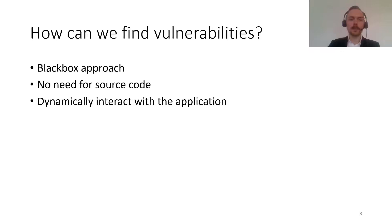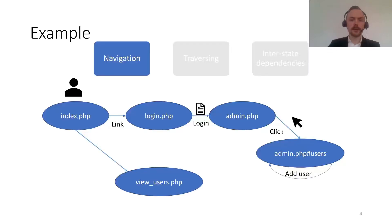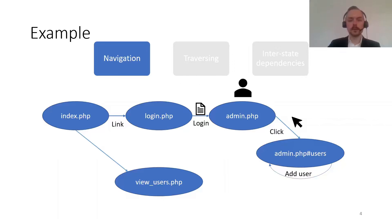This makes cross-site scripting an important topic to study. So how can we actually find vulnerabilities in these applications? Well, we can use a black-box approach. The benefit here is that we don't need the source code of the applications that we are analyzing. Instead, we dynamically interact with the application to figure out where the vulnerabilities might reside. Here's an example — we need to think about how we navigate a web application: we can follow a link between two pages, or submit a form with a username and password.